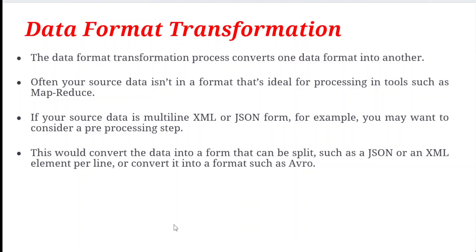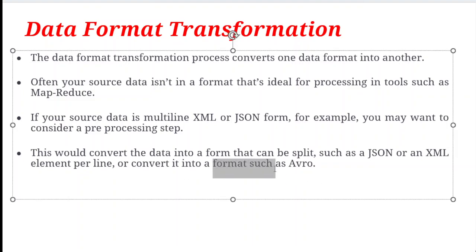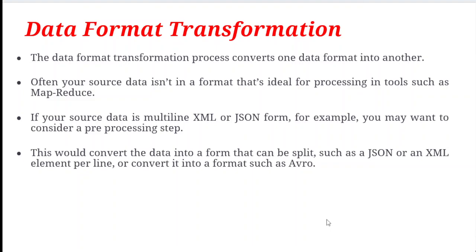The next key element is data format transformations. This process converts data from one format to another. Often your source data is not in a format suitable for processing in tools such as MapReduce. If your source data is in multi-line XML or JSON form, you may want to consider a pre-processing step. You may have CSV files, text files, JSON files, or Avro files — all these format conversions are typically handled by Apache Avro.